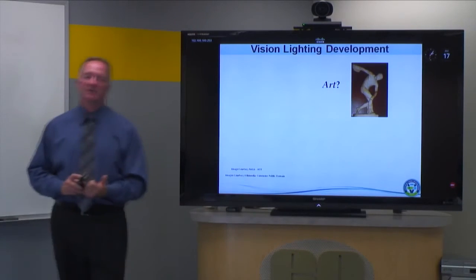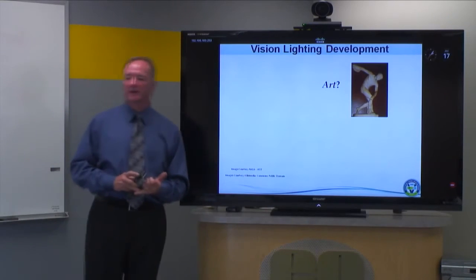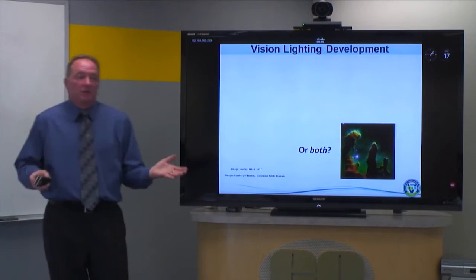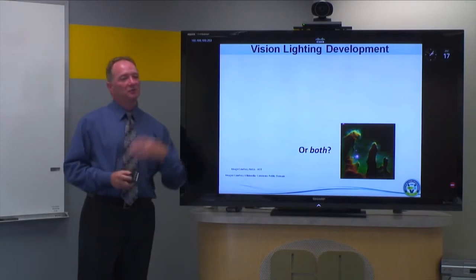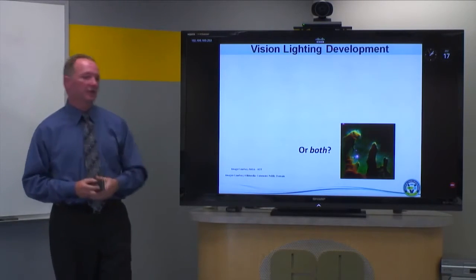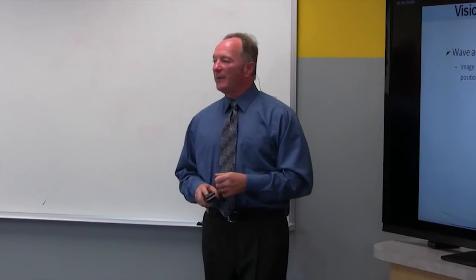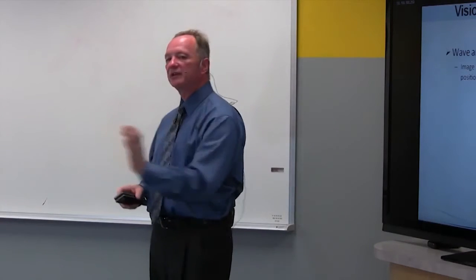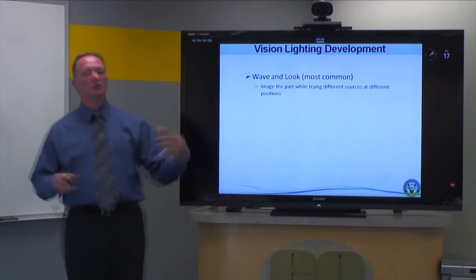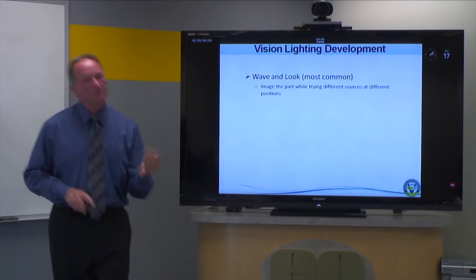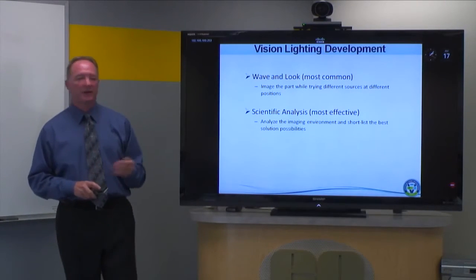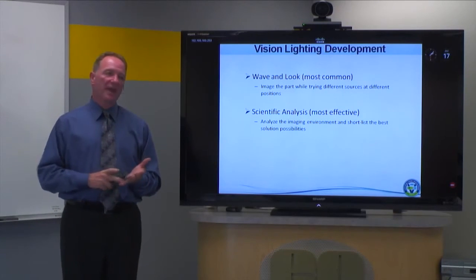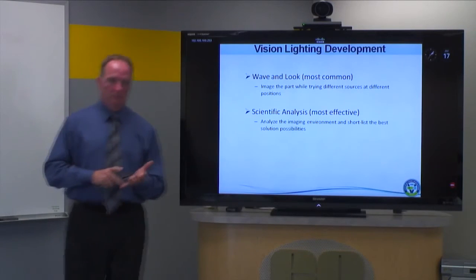I get asked this question a lot during training courses: is lighting art, is it science, or is it a little of both? I have my opinions but I won't make those known now — you can think about it at the end of the class. Looking at lighting development in general, a very common situation is 'wave and look': take a light, position it at various places around the sample until you feel you have a reasonably good quality image, and that's your solution. But there's a little more involved, and we can be more scientific about our analysis in terms of designing the proper lighting environment.